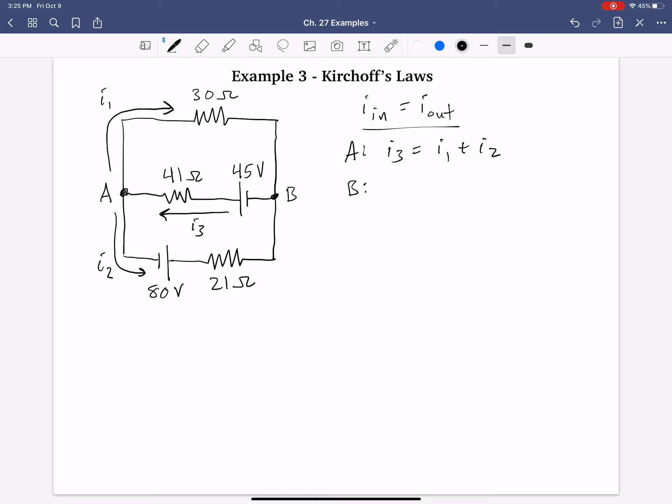For node B, it's pretty much the same thing. Currents in equals currents out. But in this case, if I keep that same pattern, I1 plus I2 equals I3. But that's really the exact same equation.